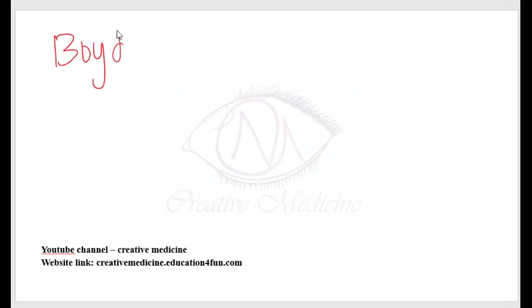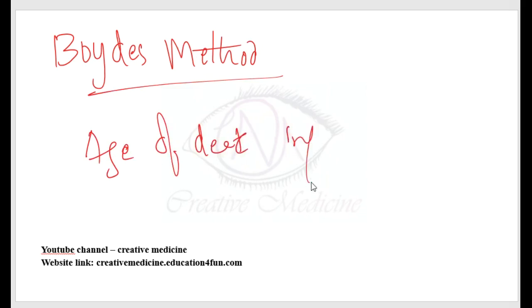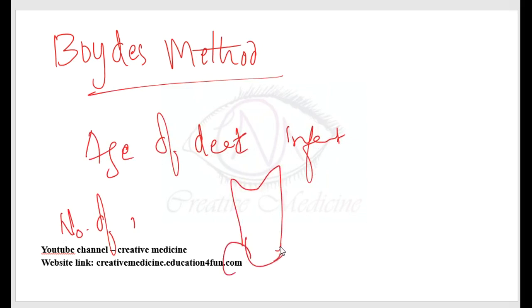Boyd's method helps to determine the age of a dead infant. This method is done by counting the number of incremental lines on the teeth. One prominent incremental line appears at the time of birth, which is called the neonatal line.